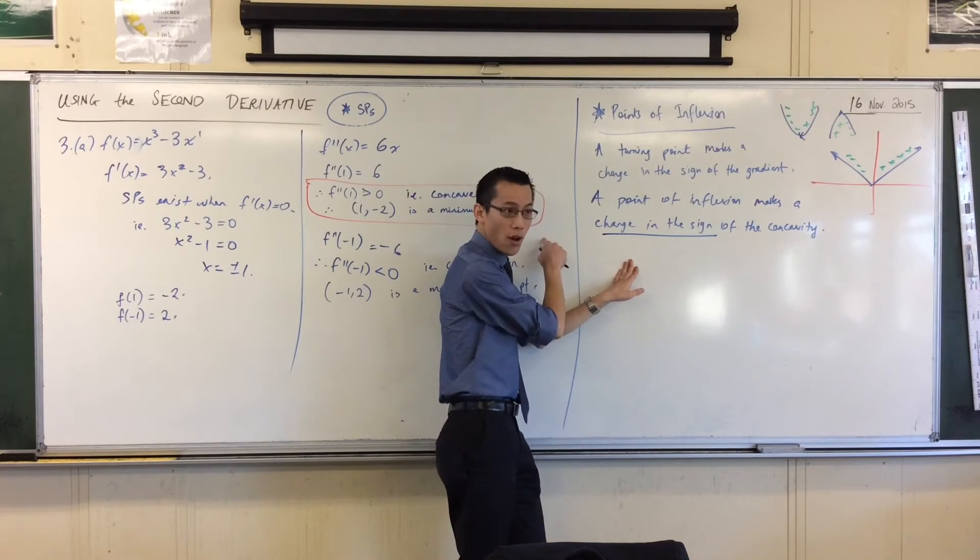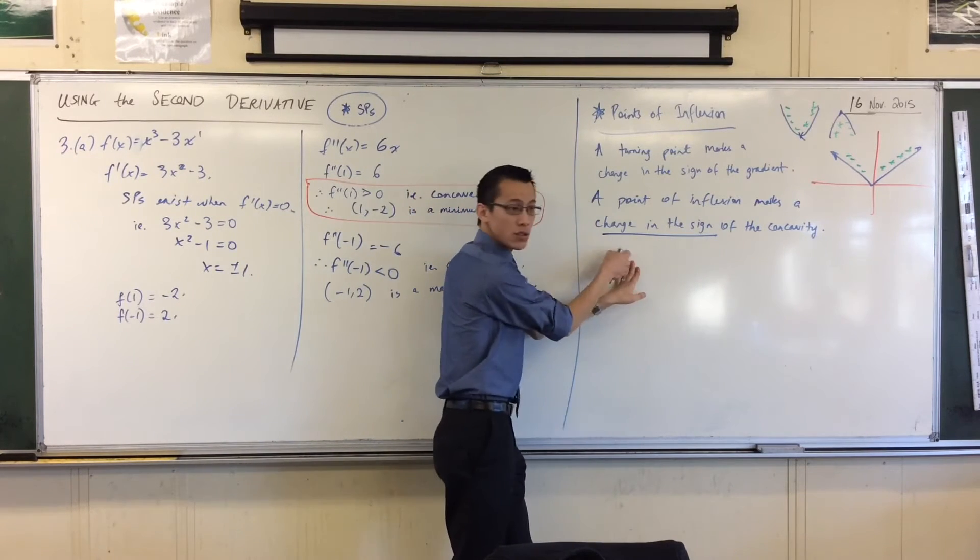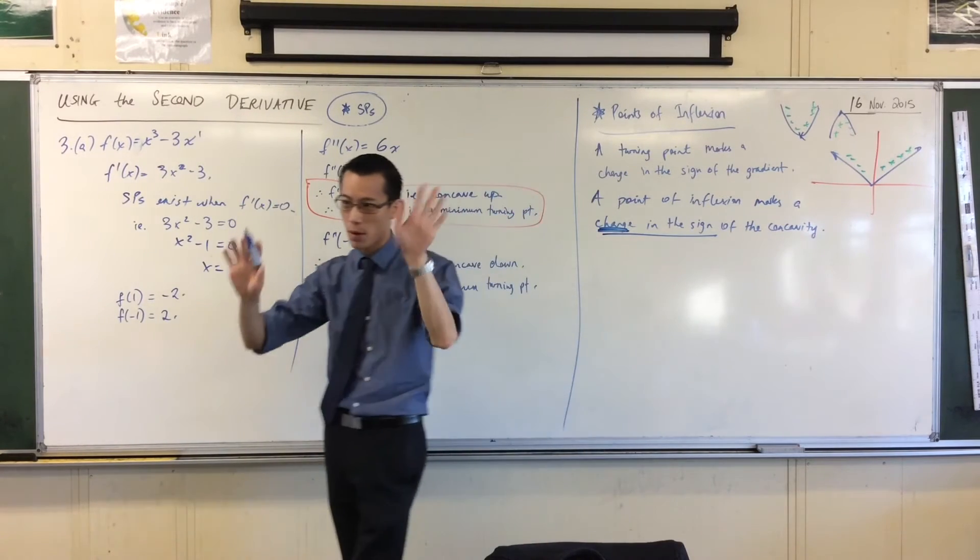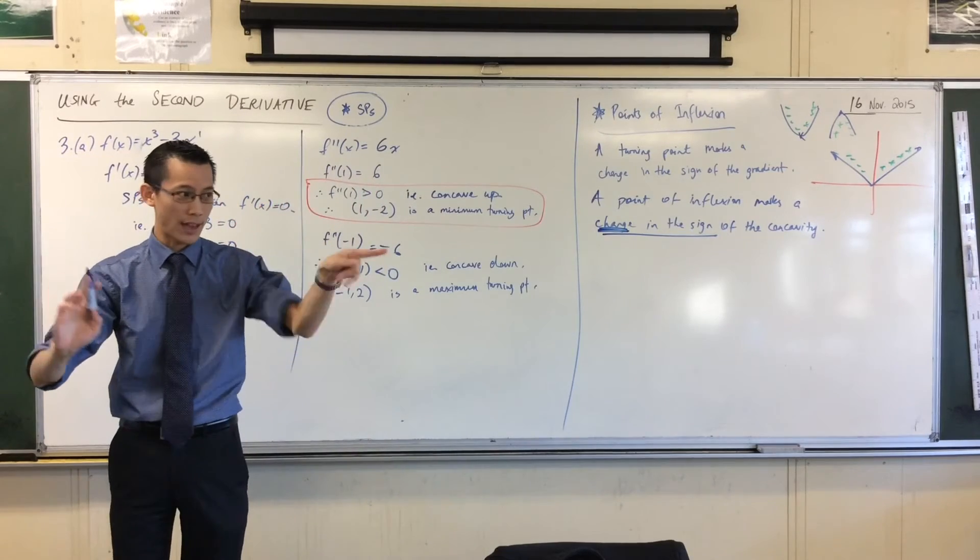Except you will have to use a table of values, because if you need a change in sign, you've got to go before and you've got to go after. There's no use telling me what's happening at that point, I want the change. I need to go negative, positive or positive, negative.